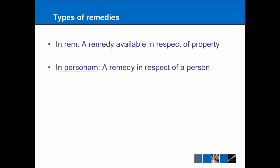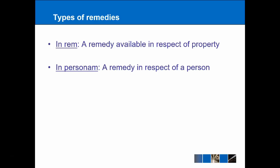The first type of remedy is that which exists in rem — in other words, a remedy that is available in respect of property. The key in this area is that you're trying to get the property back that belongs to the trust, and so a remedy in rem is normally the first place you'll go. However, remedies are also available in personam, which is a remedy that exists in respect of a person. This is most likely to come up when a trustee has breached their duty of care and the beneficiaries want to take action against that negligent trustee.